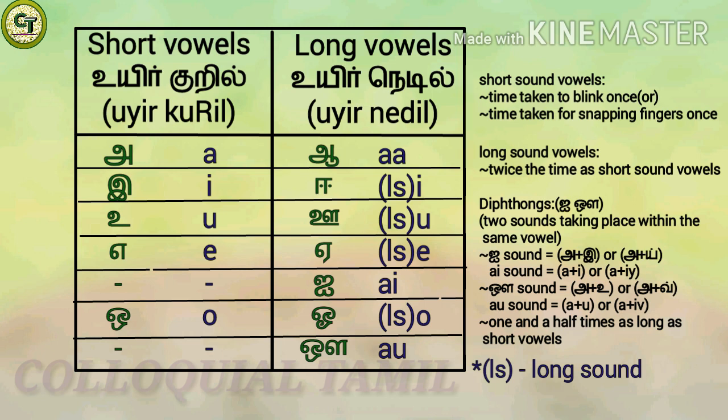Diphthongs are pronounced one and a half times as long as the short vowels, but generally both the vowels 'i' and 'au' are treated as part of the long sound vowels.